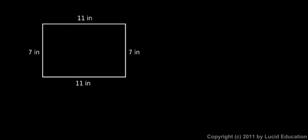Let's look at a rectangle and think about the perimeter of a rectangle. Starting here and going this way, the perimeter is going to be 11 plus 7 plus 11 plus 7, and that's in inches. You could write the inches on each of those numbers: 11 inches plus 7 inches. They do need to be in the same unit to add them up. In this case, they're all inches. 11 plus 7 plus 11 plus 7 adds up to 36 inches, and that's our answer.